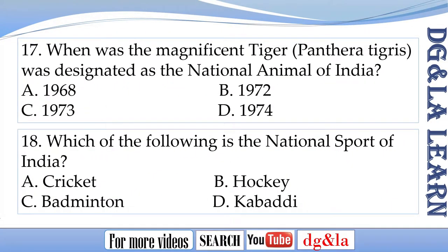Question 17: When was the magnificent tiger, Panthera tigris, designated as the national animal of India? The options are A. 1968, B. 1972, C. 1973, D. 1974.